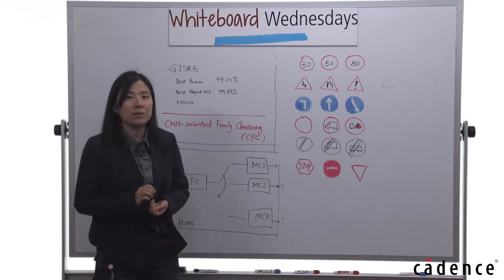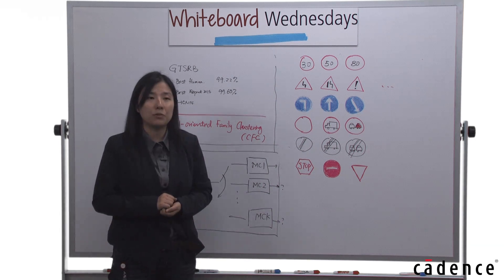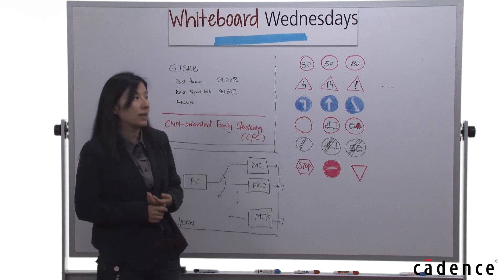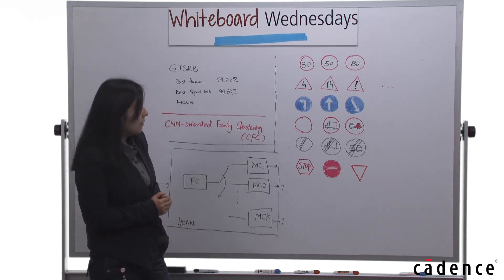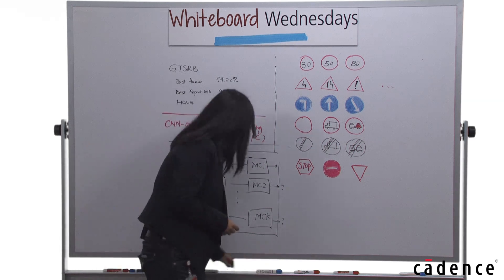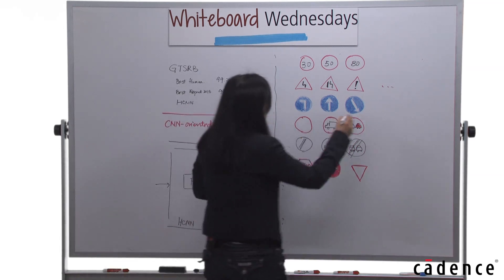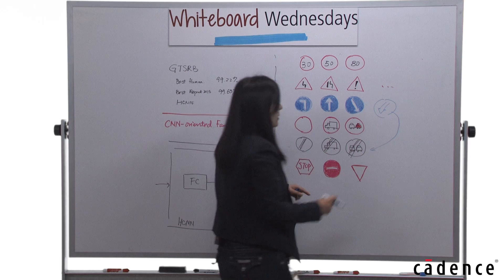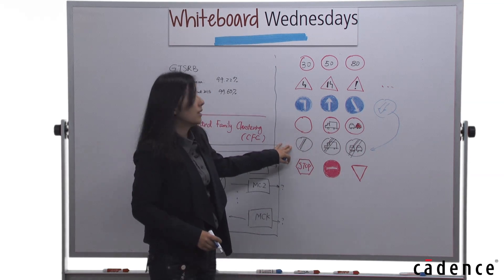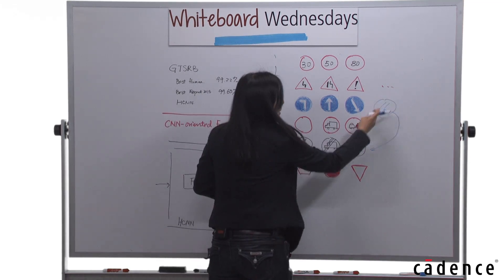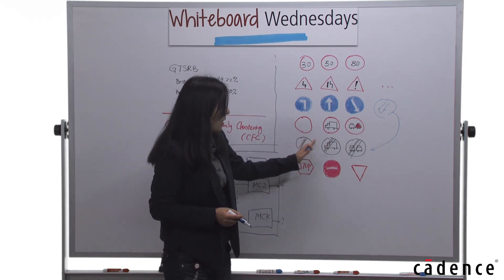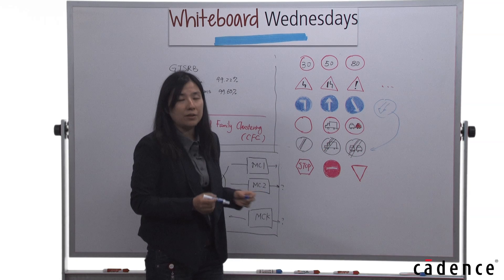There are noticeable differences between human-preferred families and CNN-oriented families. For example, the keep left sign, which is opposite to keep right, gets grouped with the restriction signs because the CNN treats the left-pointing down arrow as similar to the bars in restriction signs.